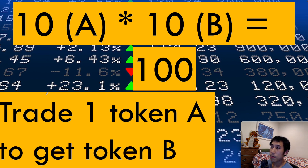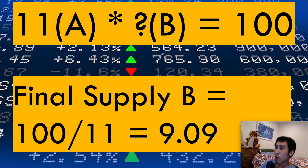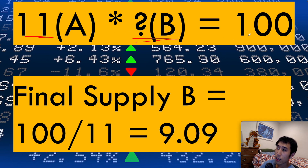Let's look at a concrete example. Let's say the DEX has 10 tokens of token A and 10 tokens of token B. The product is 10 times 10, which equals 100. Now let's say you want to trade one token A for token B. At the end of the transaction, we know we are going to have 11 tokens of token A in the exchange. The product must still be 100, so 11 multiplied by the new supply of token B has to equal 100. If we divide 100 by 11, we see that the final supply of token B is 9.09.